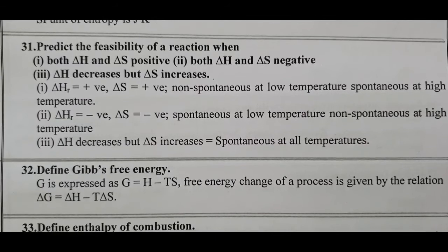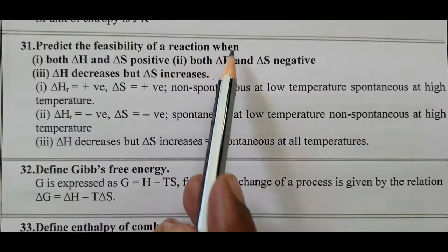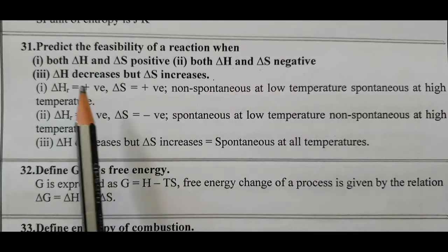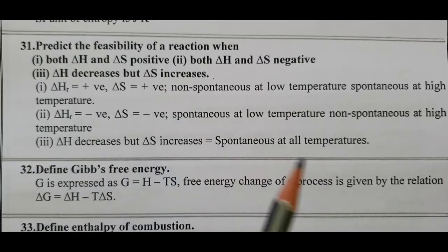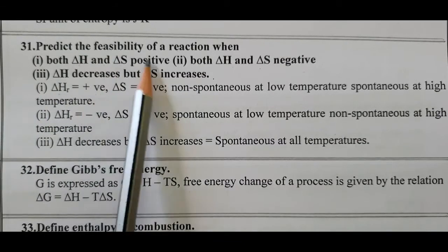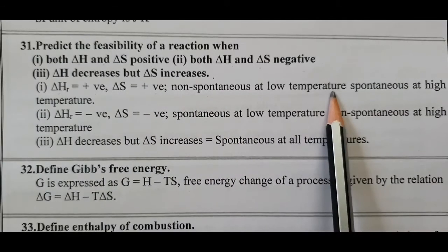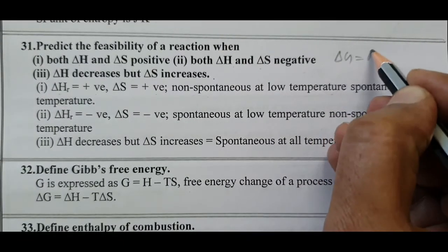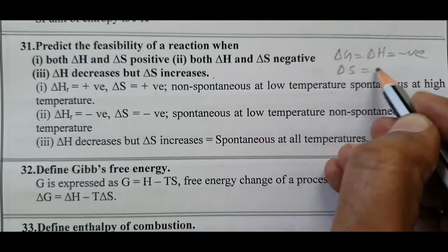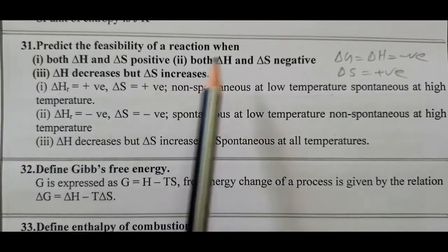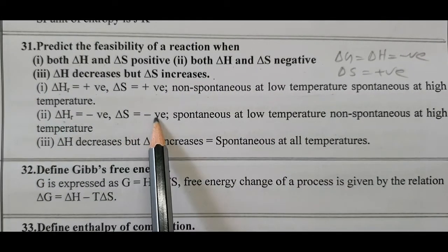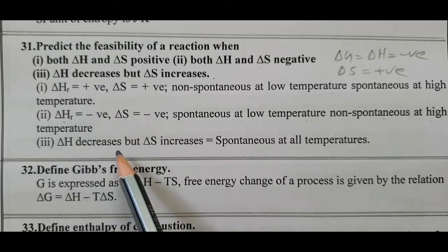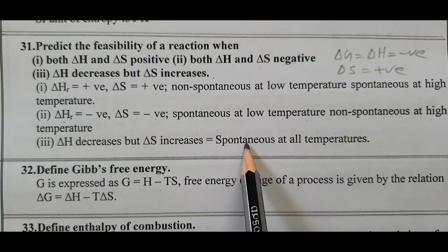Question number 31: Predict the feasibility of a reaction. When both delta H and delta S are positive: non-spontaneous at low temperature, spontaneous at high temperature. The spontaneity condition is delta G equals delta H minus T·delta S being negative. When both delta H and delta S are negative: spontaneous at low temperature, non-spontaneous at high temperature. When delta H is negative and delta S is positive: spontaneous at all temperatures.